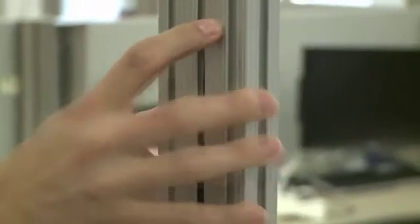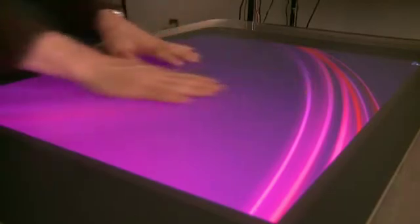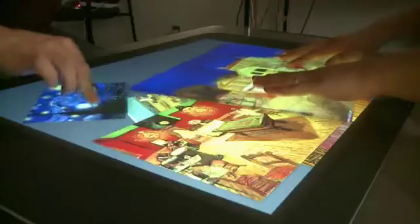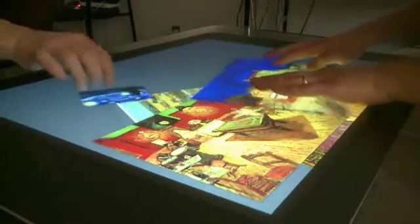When we interact with everyday surfaces, touch, tactile and haptic feedback are very important for interaction. When interacting with a digital table, tactile feedback is generally static, unchanging, where the texture of a table does not reflect what the person is doing or the task at hand.